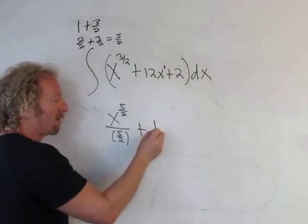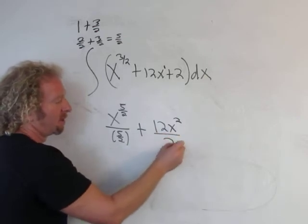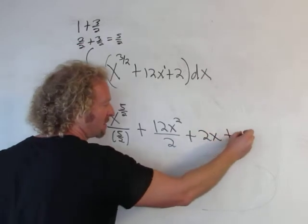And then here's a 1, so you get 12x squared and you divide by 2. Plus, and then when you integrate 2, you just always put an x. And you have your plus C.